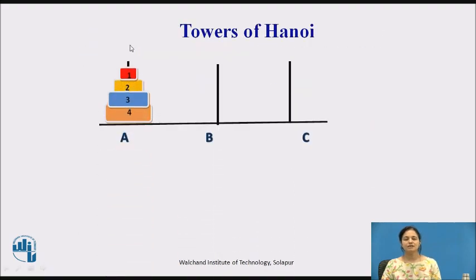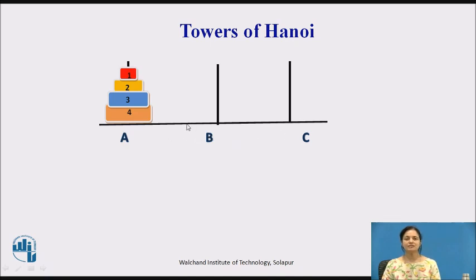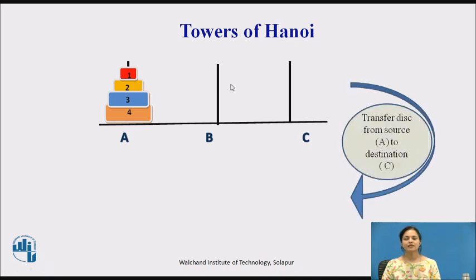Now, in the Tower of Hanoi, we have 1, 2, 3, 4 disks like this. There may be any number of disks. We also have 3 towers: A, B, C. The towers are fixed — only 3 towers are there — but the number of disks may vary.